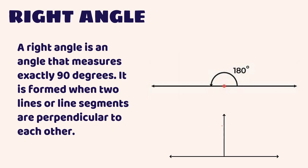Right angle. A right angle is an angle that measures exactly 90 degrees. It is formed when two lines or line segments are perpendicular to each other. As shown in the picture, let us assume AB is one line and P is another line which is perpendicular to it. The angle formed here is 90 degrees. This we call a right angle.